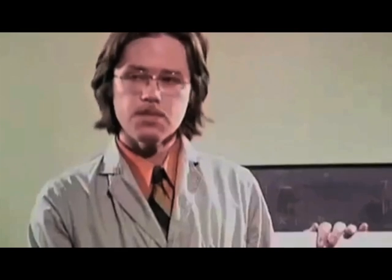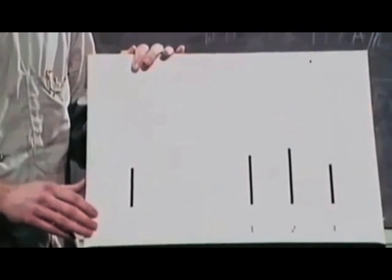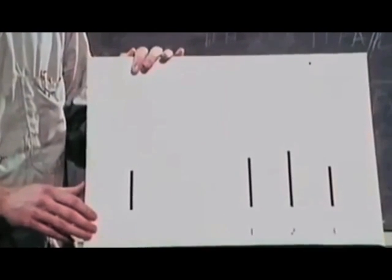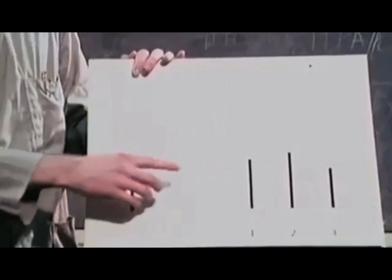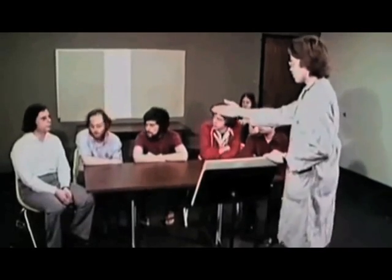Please begin. The experiment you'll be taking part in today involves the perception of line length. Your task will be simply to look at the line here on the left and indicate which of the three lines on the right is equal to it in length. The actors have been told to match the wrong lines. The volunteer will be monitored to see if he gives the correct answer, or if he goes along with the opinion of the group and gives the wrong answer.